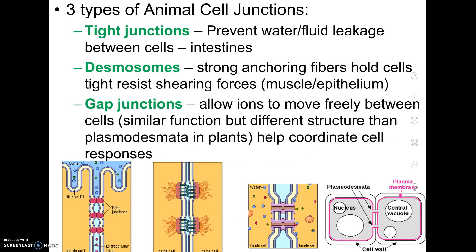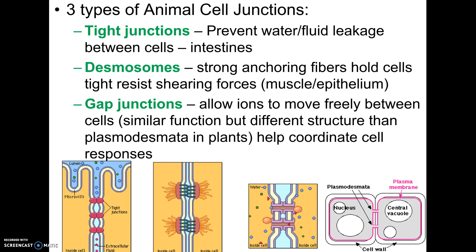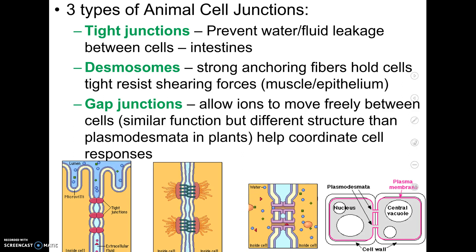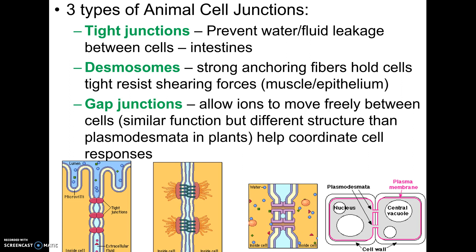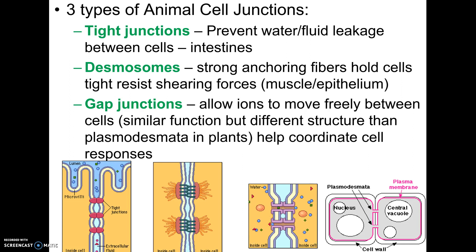The last one is called gap junctions. A gap is like a space, and gap junctions form tunnels. Some cytoplasm can directly flow from one cell to another — this depends on the area of the body. You should be able to recognize these from pictures and know the specific job of each one. Tight junctions look like little buttons and prevent fluid leakage. Desmosomes have spikes for areas of stress like skin and muscles. Gap junctions look like little tunnels to let things through.